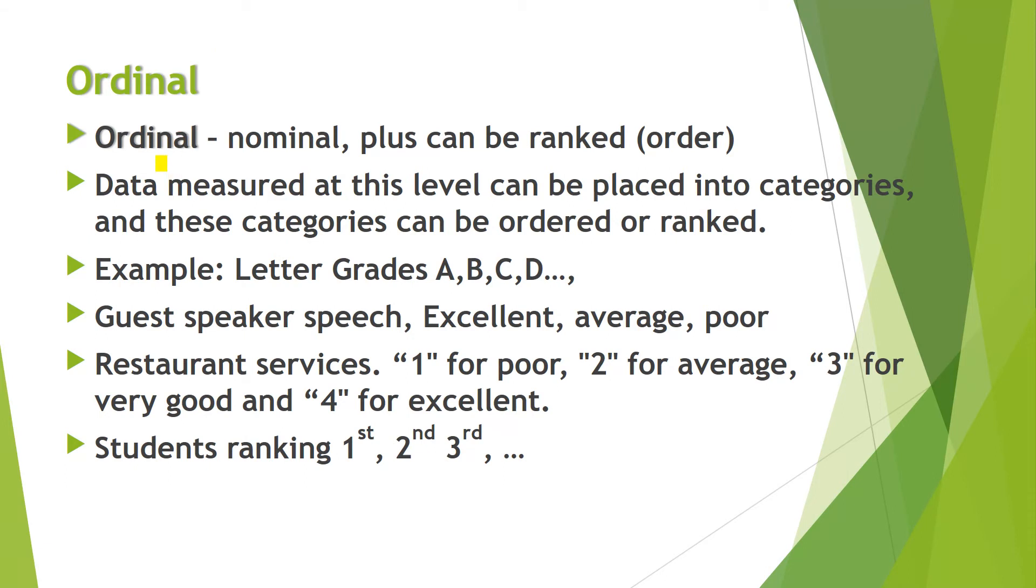Second is the ordinal measurement. Ordinal, nominal. It can have the characteristics of the nominal plus can be ranked. There is ranking involved. Data measured at this level can be placed into categories. And these categories can be ordered and ranked. Just like you can take the example of the letter grades A, B, C, D. Some students have A, some B, some C, D and so on. We can make the ranking or order. Just like another example, guest speaker's speech. We may say the speech was excellent or good or average or poor. Restaurant services, 1 for poor, 2 for average, 3 for very good and 4 for excellent. Students ranking, 1st, 2nd, 3rd and so on. These are the examples of an ordinal. In ordinal, nominal plus can be ranked.